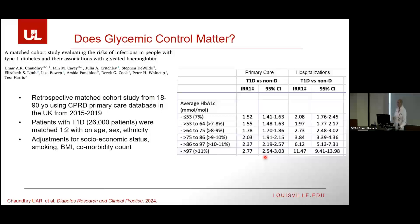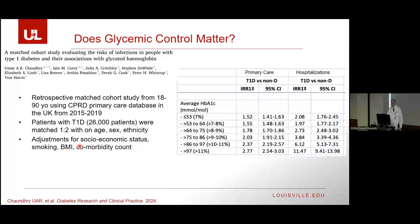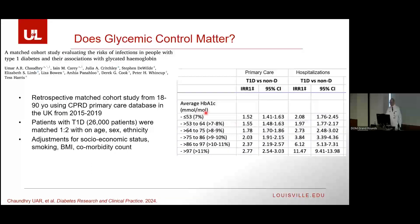Does glycemic control matter? Is having diabetes itself enough to increase infection risk, or is it just people who don't manage their diabetes well? This is a matched cohort from the UK looking at type 1 diabetic patients matched one-to-two on age, sex, and ethnicity, with adjustments for socioeconomic status, BMI, smoking, and comorbidities. They broke it down by primary care infections and hospitalizations. Even at baseline with a hemoglobin A1c around 7%, there is still an adjusted incident rate of 1.5 for primary care infections and two for hospitalizations. As the A1c increases, suggesting poor glycemic control, especially for hospitalizations, that incident rate goes way up.